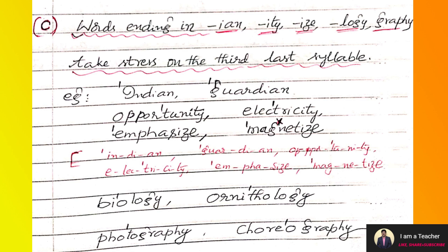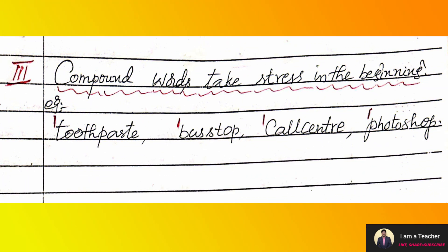In this way, we have to divide the words into syllables as rough work, then in the fair work write the answer as shown on the screen. Prefix and suffix rules are now complete. Compound words: two or more words that combine together to form a single word — they take stress in the beginning. For example, toothpaste, bus stop, call center, Photoshop, grandfather, grandmother, handbag — all these words take stress in the beginning because they are compound words.